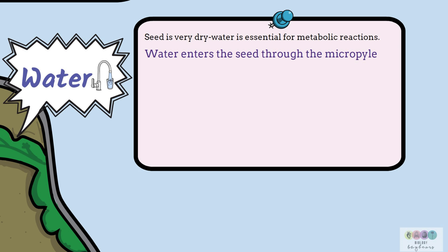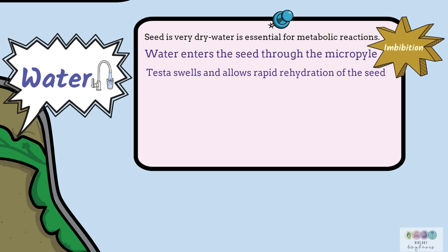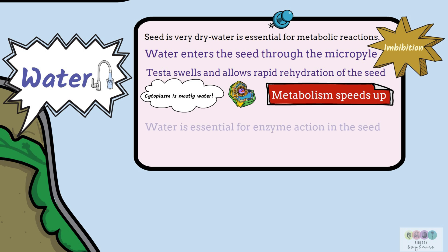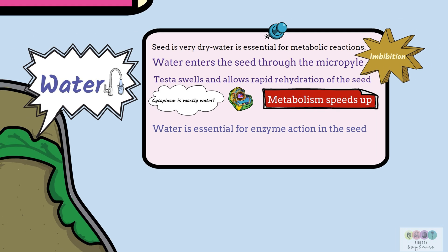Water will enter the seed through the micropyle and this is called imbibition. Once some water enters the seed, the testa will swell and this allows for the rapid full rehydration of the seed because more water will enter. Consider also that cytoplasm is mostly water, so water is needed for cytoplasm, and once the cells are rehydrated, metabolism greatly speeds up in the seed. Water is also essential for enzyme action in the seed.